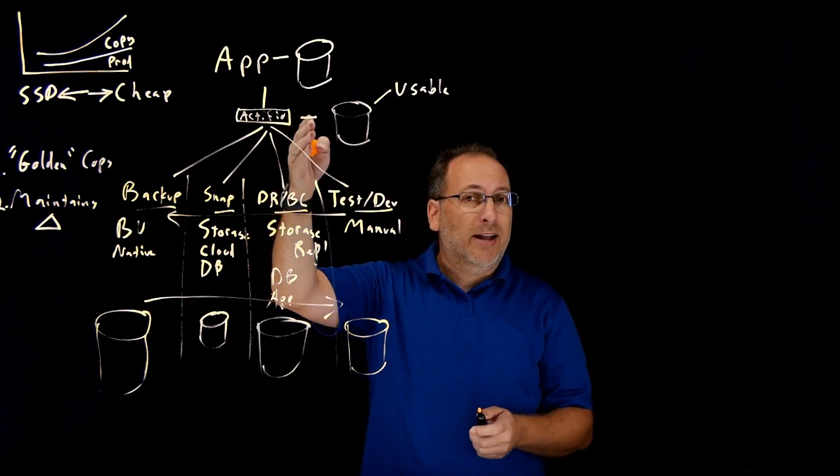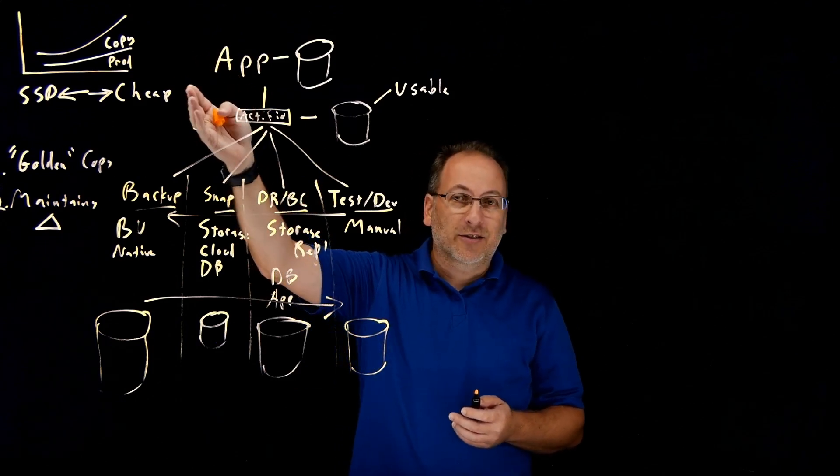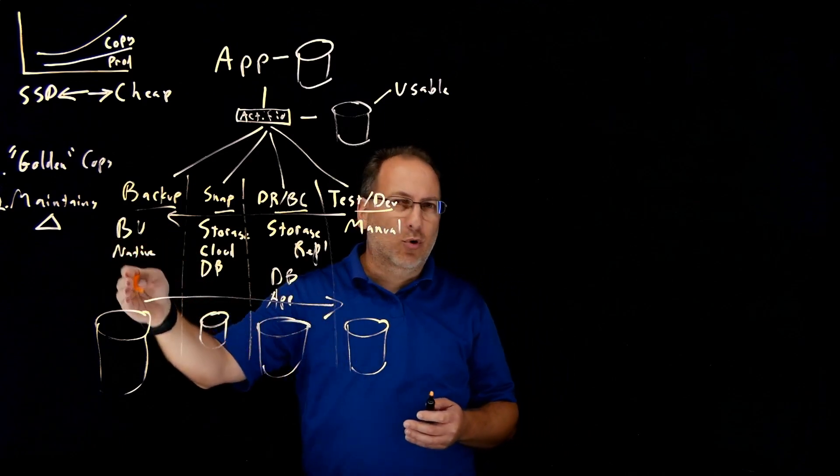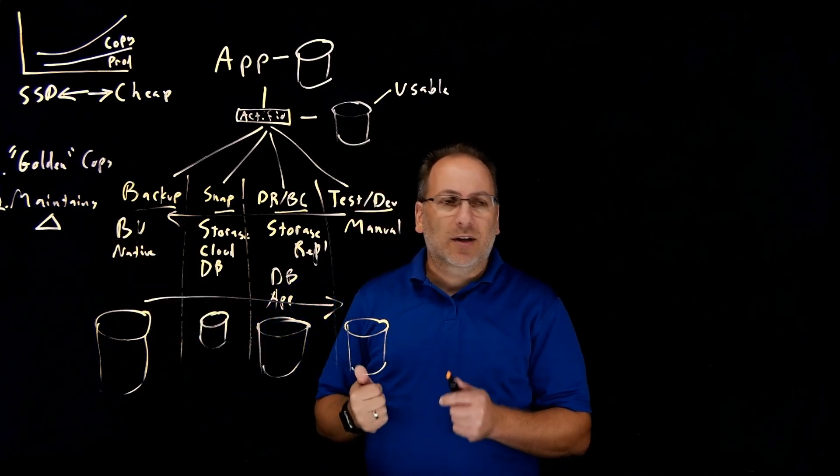On the other hand, this can be administered, managed at the application layer. You're not managing LUNs like you are in snapshots. You're doing it at the application layer. So again, more characteristics, more similar to backup, a little bit of the best of both worlds happening there.